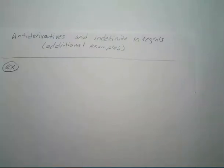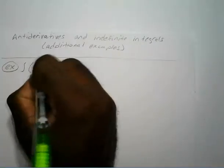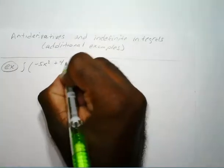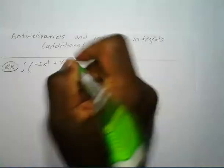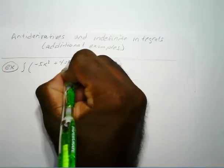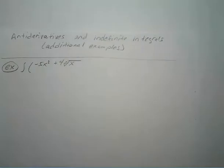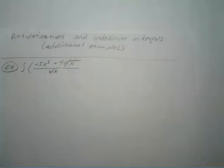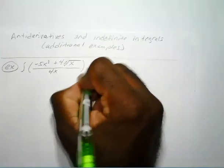So let's say for example you have the integral of negative 5x to the third power plus 4 times the fifth root of x, all over 5 times the fifth root of x over 4x, and that's with respect to x.